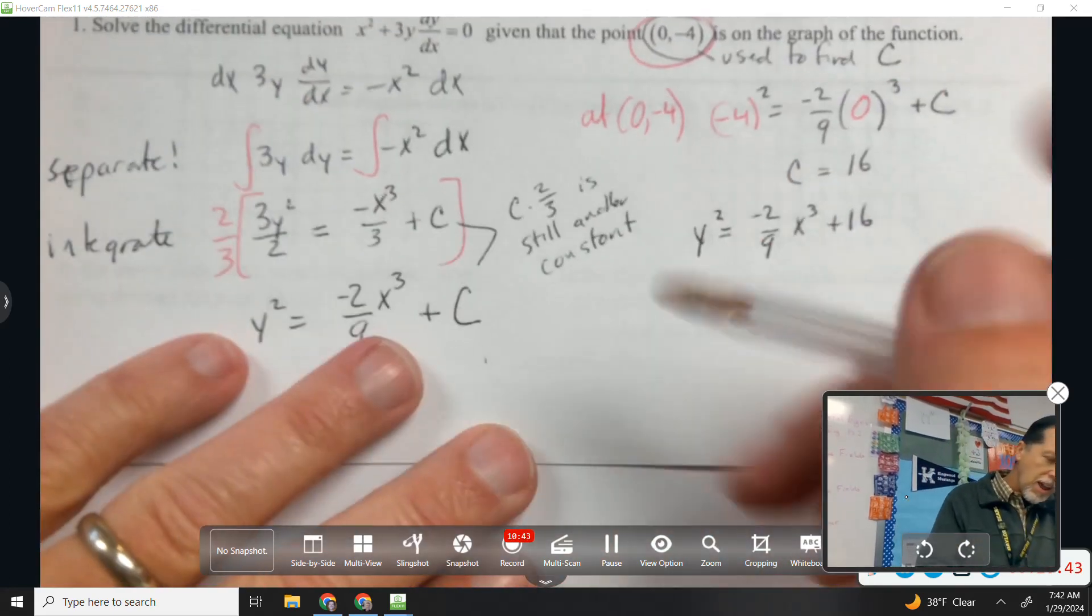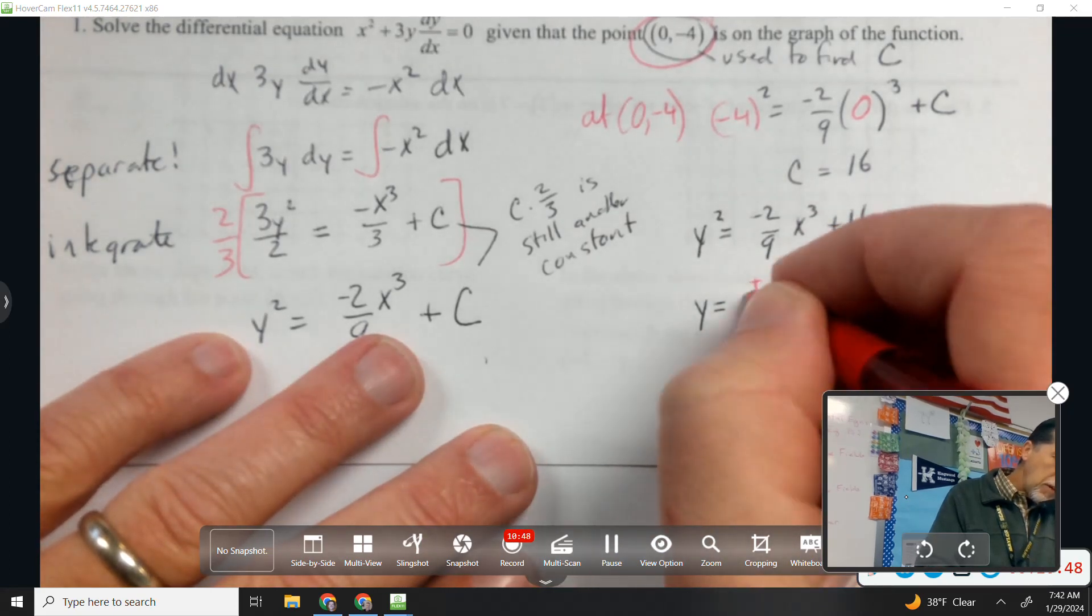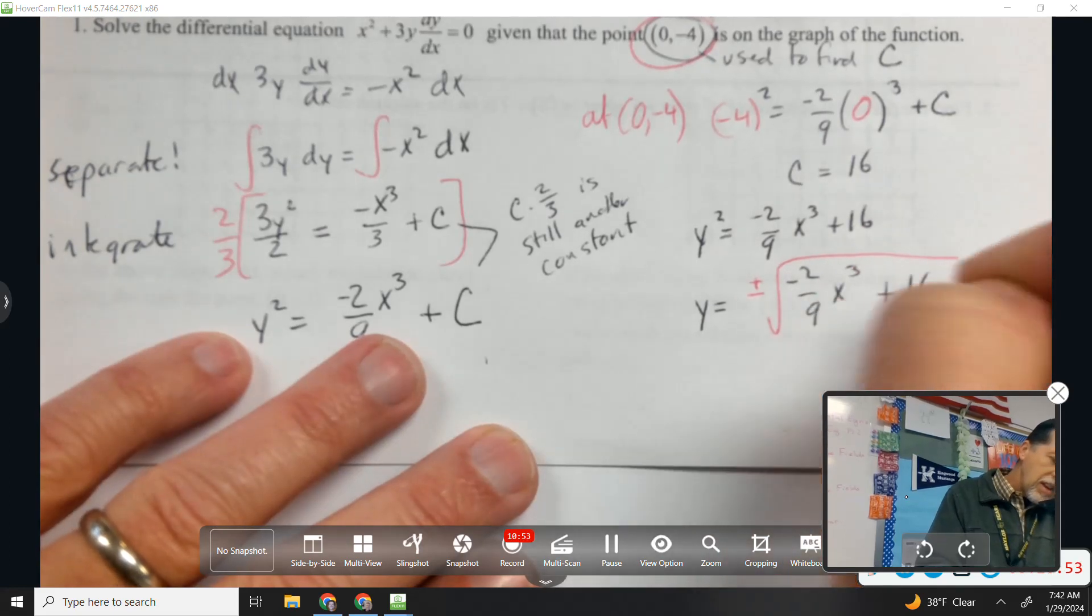So let's solve for y, which means we put a square root on the other side, but with the square root comes the plus or minus.